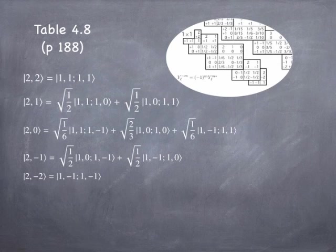These states are all symmetric under interchange of the two particles, so they're no good if I'm looking for an anti-symmetric state. For carbon we want maximum spin, which occurs in the triplet. The triplet is symmetric, so the spatial angular momentum part of the wave function has to be anti-symmetric. Since these L=2 states are all symmetric, L=2 cannot be used for carbon.